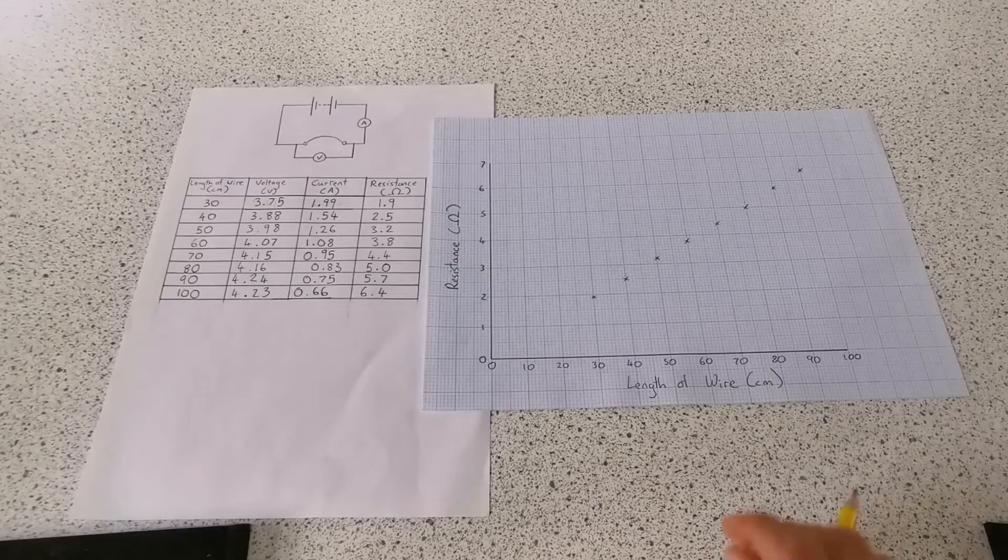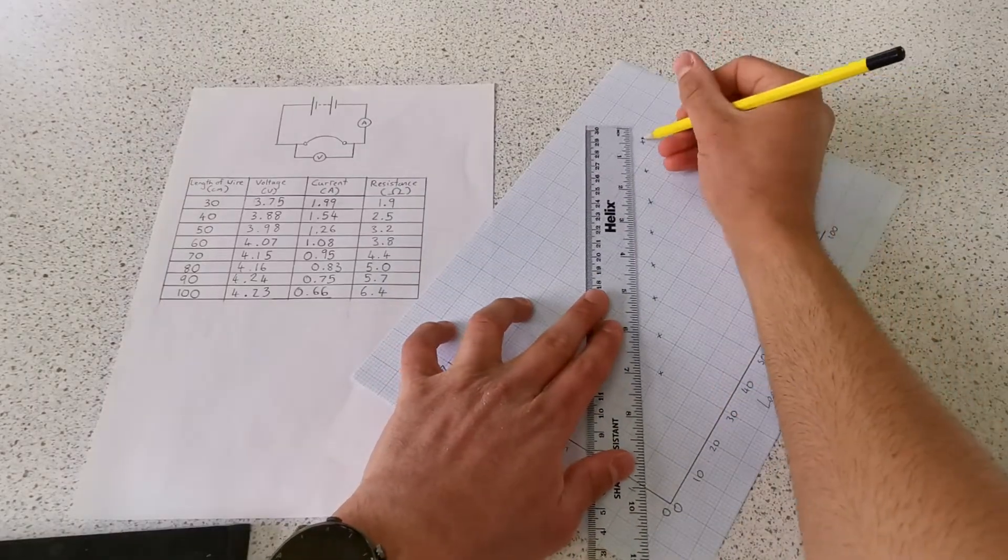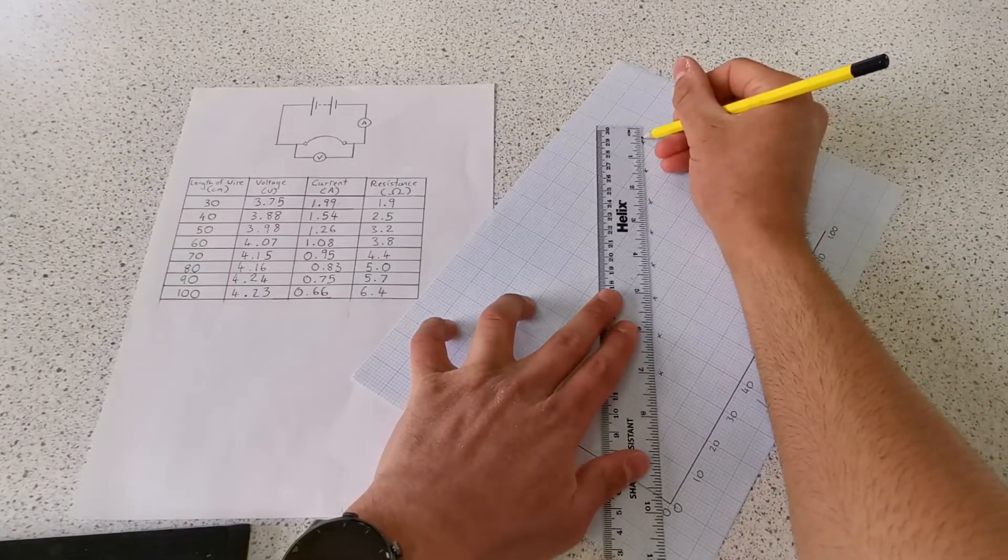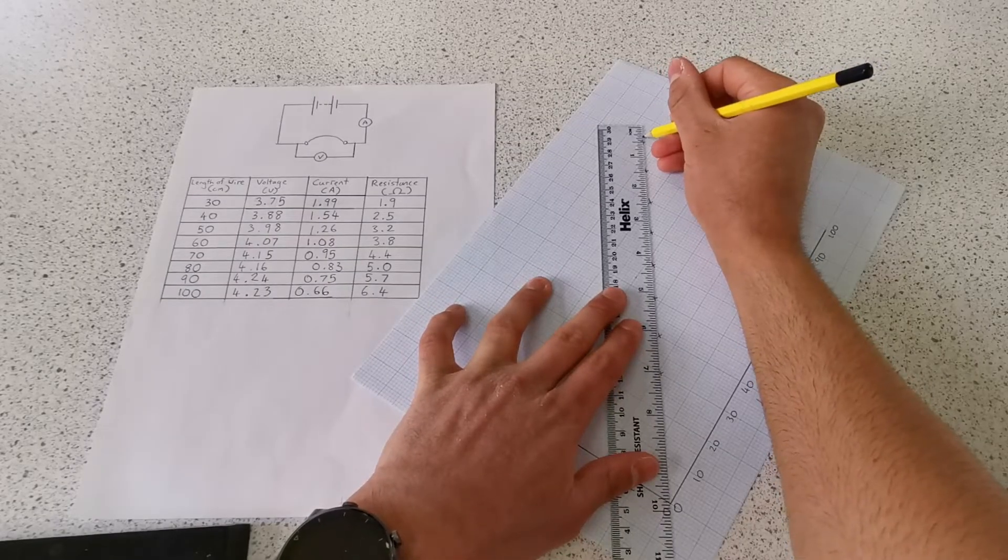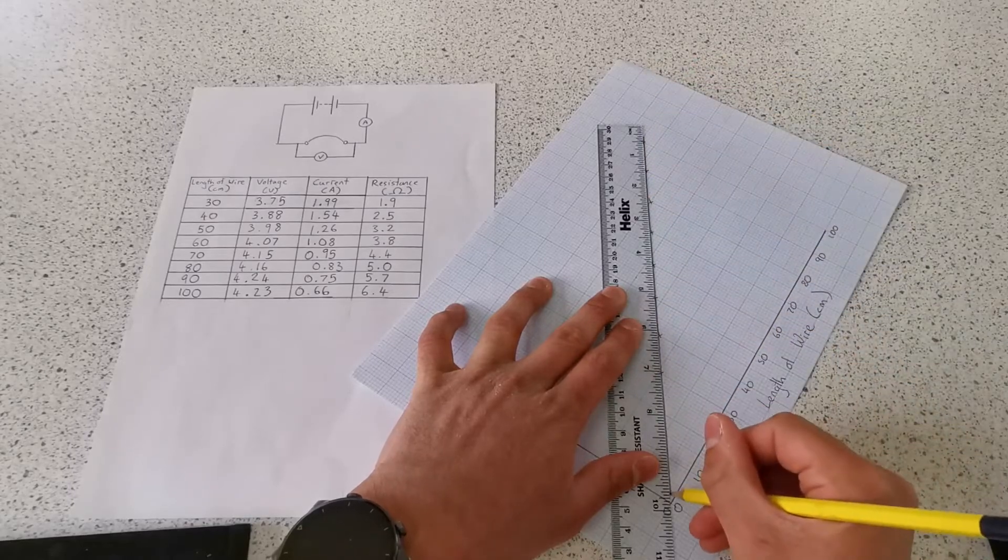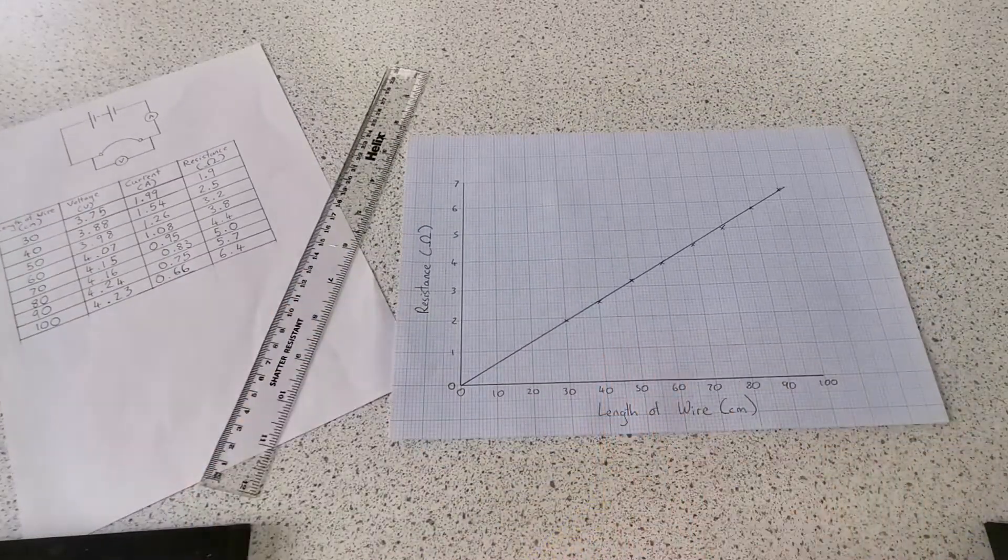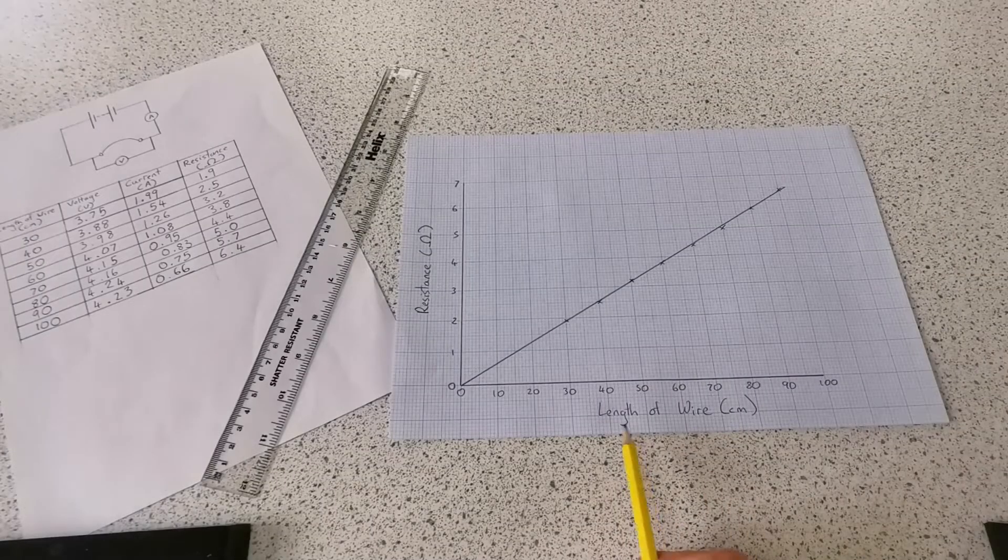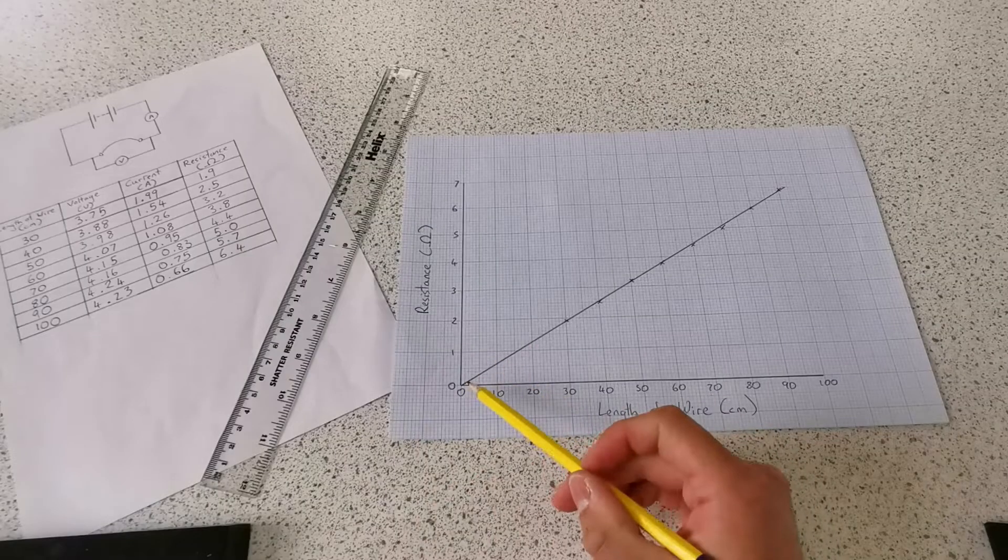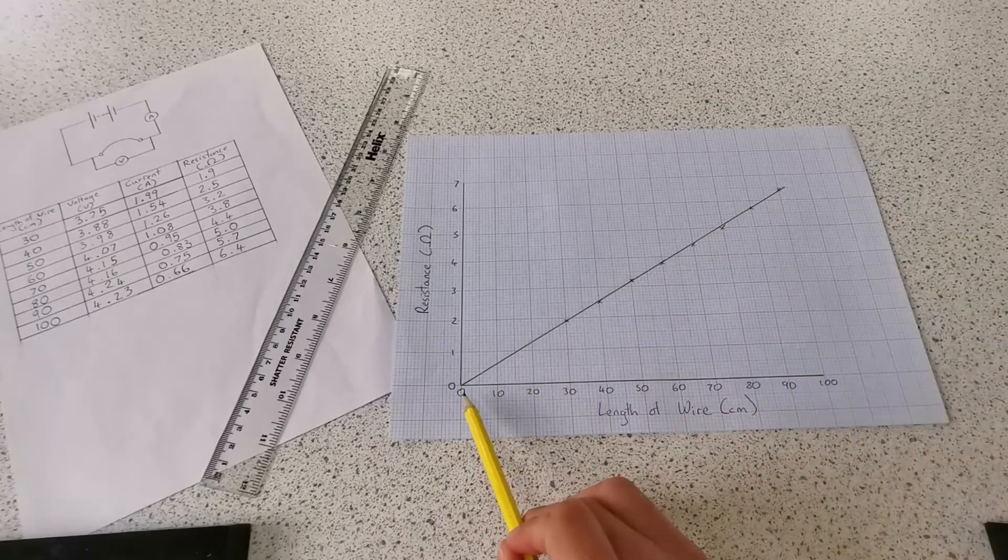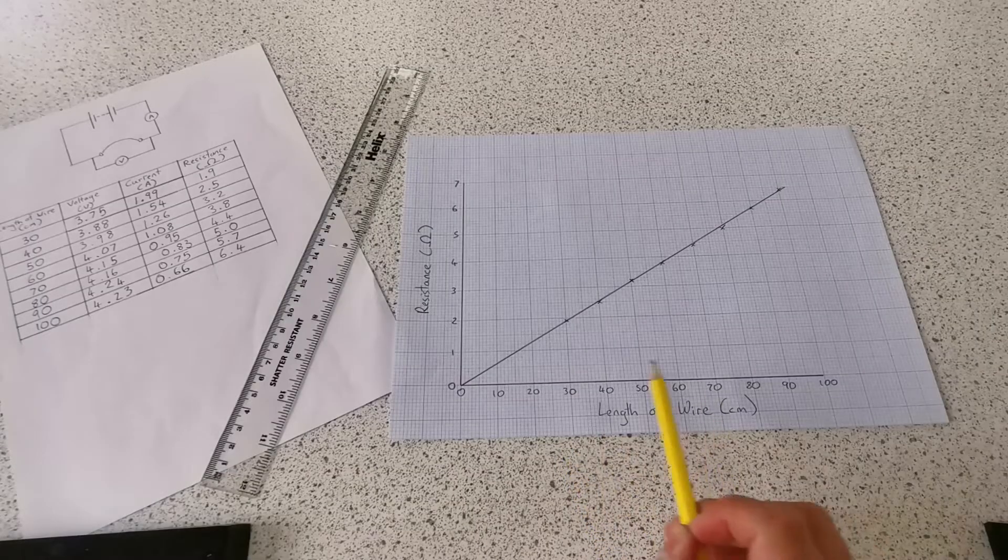Now I'm going to join up the points using a ruler, so I'm going to draw the line of best fit. And as you can see, as the length of wire increases, the resistance increases. In fact, it's a straight line that goes through the origin zero, so this shows a directly proportional relationship.